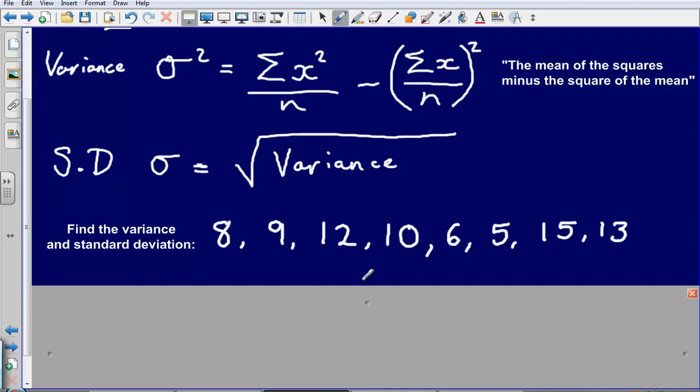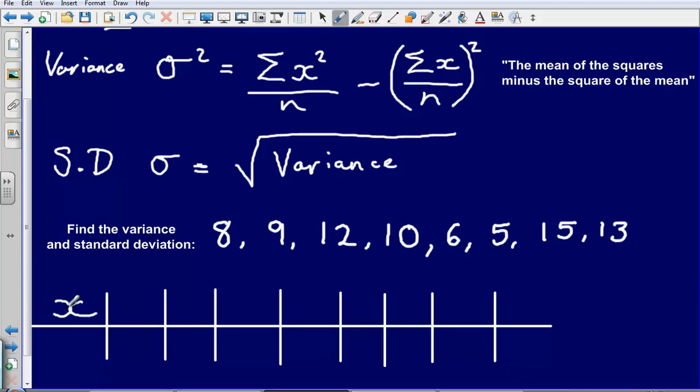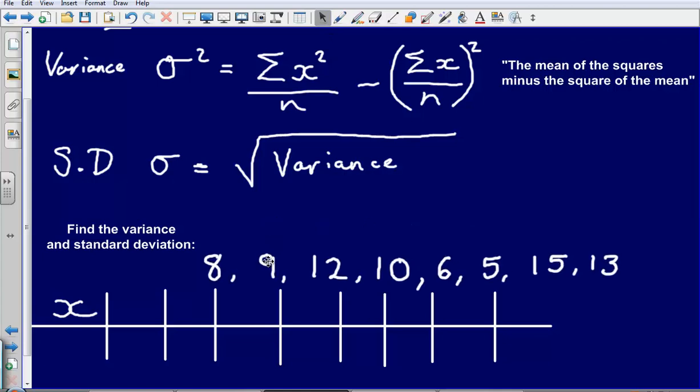So let's take a look at how we might go about doing this. I'm asked to find the variance and standard deviation for the numbers 8, 9, 12, 10, 6, 5, 15, and 13. So what I like to do is I like to set up a little table like this, and I like to just simply put my numbers into this table.